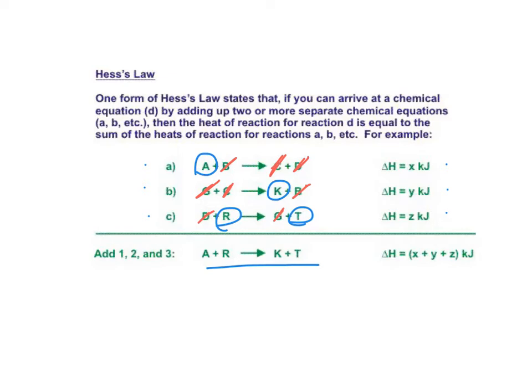And if you add them up you do in fact get the end reaction. Now to find the Delta H's we're going to take X plus Y plus Z and that will give us the Delta H for that reaction that we have there.